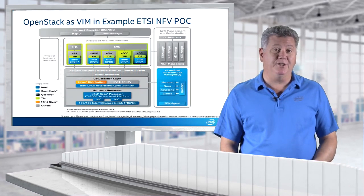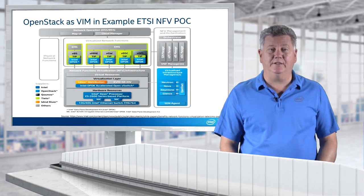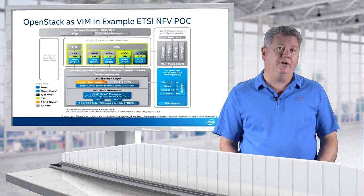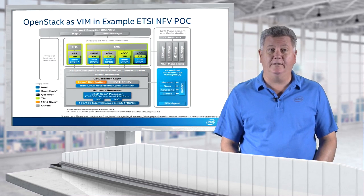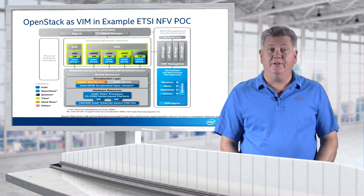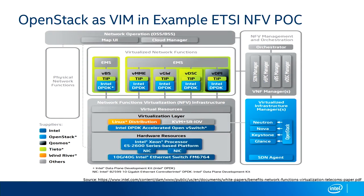If we double-click on that a little bit and take a look at the larger elements inside a well-defined cloud environment, you'll see that the VIM — the OpenStack instantiation in our previous example — is this sort of bluish shaded section in the lower right-hand corner, where we find elements such as Neutron, Nova, Glance, and Keystone, and a variety of those projects in that OpenStack environment.